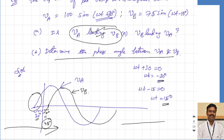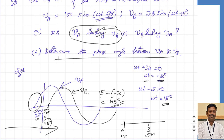The phase angle between V_a and V_b is calculated by subtracting the zero-crossing angles: 15° − (−30°) = 15° + 30° = 45°. So V_a leads V_b by 45 degrees. In general, to find the phase difference, equate the argument of each sine to zero, get the angle for each wave, then take the difference including signs.